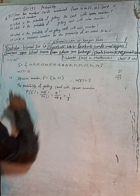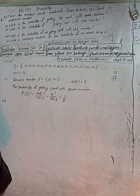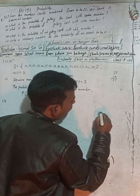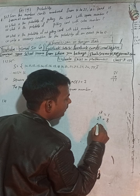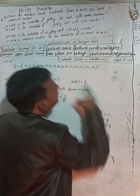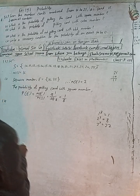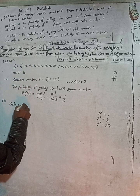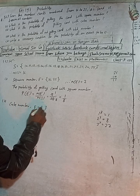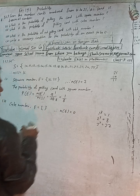Number 2: What is the probability of getting a card with a cube number? For cube numbers: 1 cubed is 1, 2 cubed is 8, 3 cubed is 27. But there is no 1, 8, or 27 between 10 and 25. So the event E is an empty set, and n(E) = 0. Therefore P(E) = 0/16 = 0.